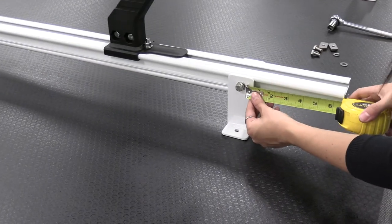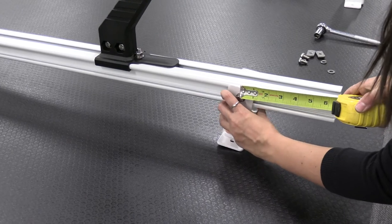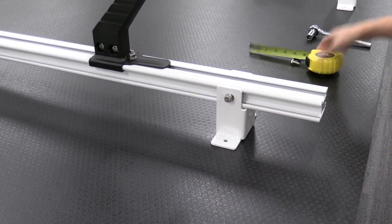Before tightening, be sure the length to the end of the crossbar is correct for your vehicle. The lengths are noted in the install guide. Repeat these steps for all four feet.